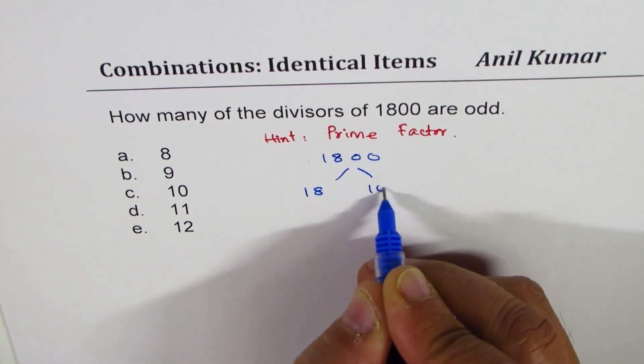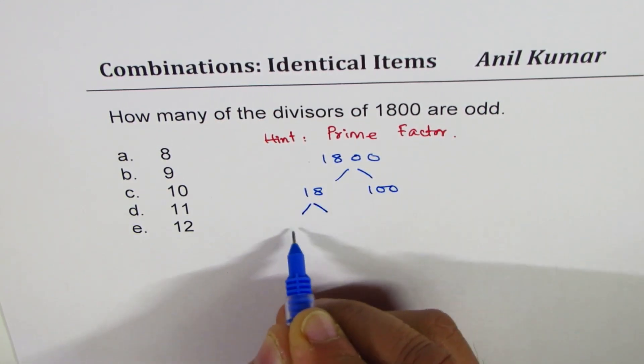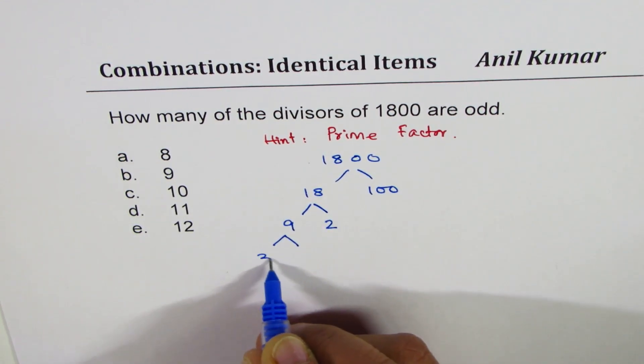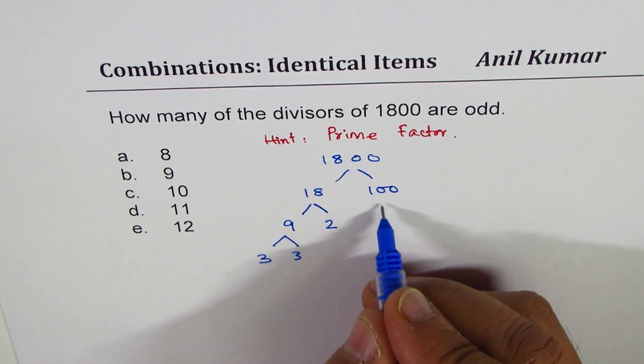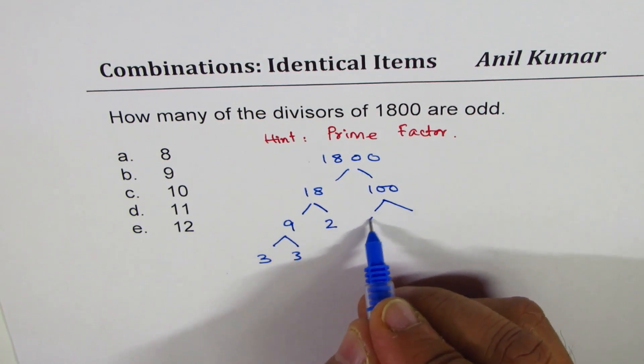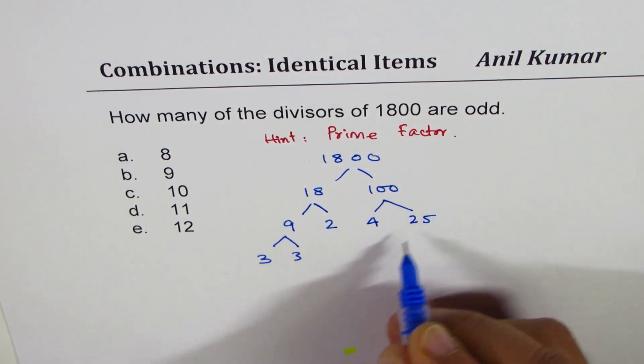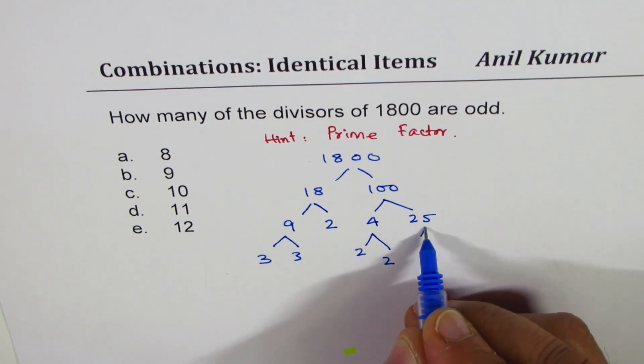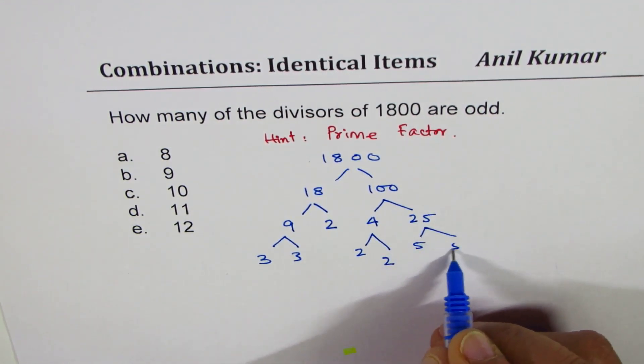1800 we could say is 18 times 100. 18 is 9 times 2, 9 is 3 times 3, 2 is a prime factor here. We could write 4 times 25 is 100. 4 is 2 times 2 and 25 is 5 times 5.